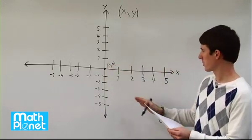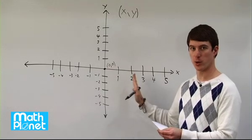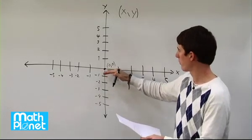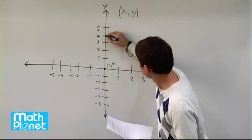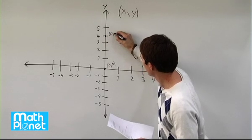Next we have 0, 4, so x is still 0, we don't go left or right at all, but we go up 4, 1, 2, 3, 4. Right there, 0, 4.